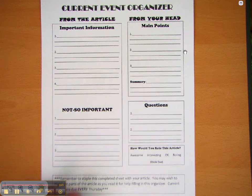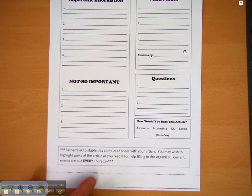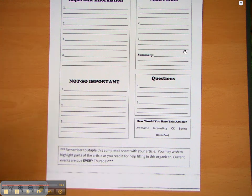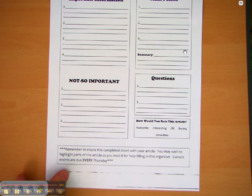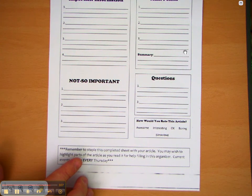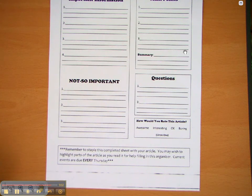At the very bottom, it's a little reminder to staple this completed sheet with your article. The article you're going to turn in on Thursday with this stapled to it. The article will have your highlights on it. You may wish to highlight parts of the article as you read it to help fill in the organizer. And it's due to me every Thursday.